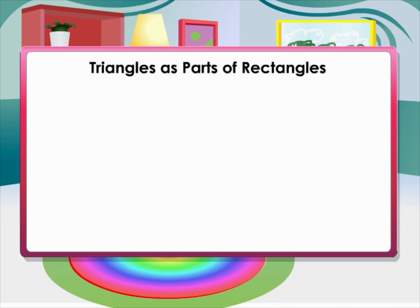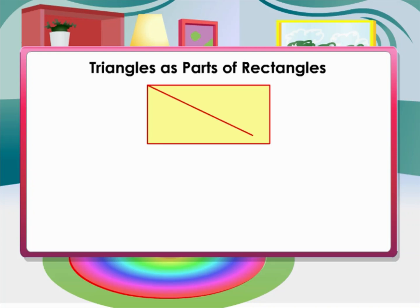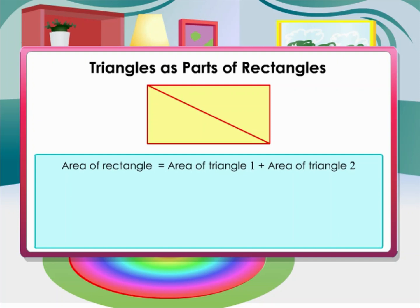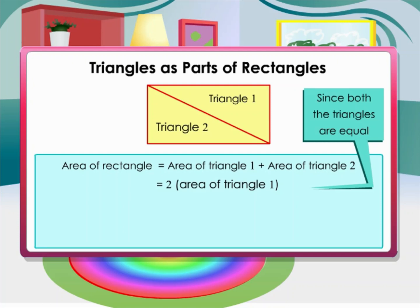Triangles as parts of rectangles: in this rectangle, draw a diagonal. It splits the rectangle into two equal halves — triangle 1 and triangle 2. Both triangles are congruent, hence their areas are equal. The area of the rectangle equals the area of triangle 1 plus the area of triangle 2, which equals 2 times the area of triangle 1.